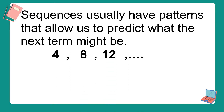Example, dito sa sequence na to: 4, 8, and 12. Since this is increasing, ibig sabihin nag-a-add lang tayo ng certain number para makuha yung susunod na term. Ano ang i-add natin para makuha yung 8 from 4? That is equal to 4. Kailangan nating mag-add ng 4 para makuha yung susunod na term. Dito din sa susunod na term, sa 8 para makuha yung 12, kailangan din nating mag-add ng another 4. Nag-a-add lang tayo ng 4 para makuha yung susunod na term.